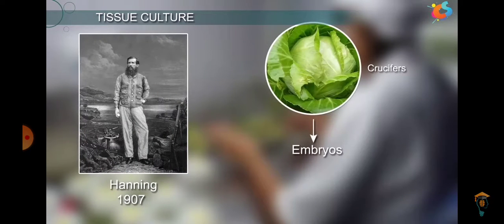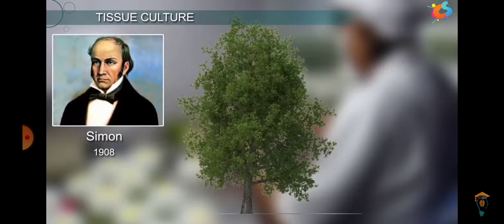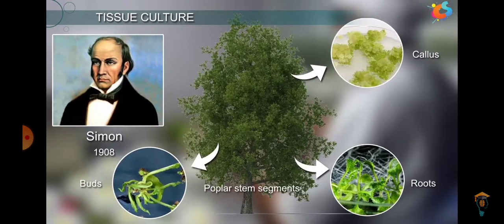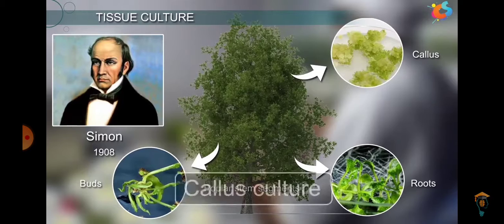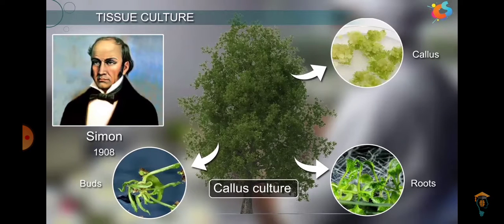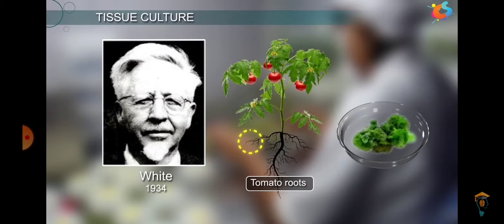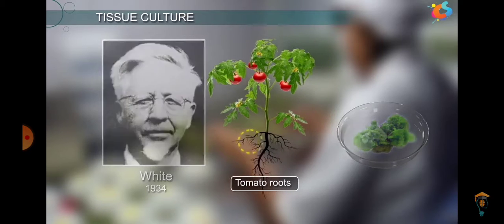Later, in 1907, Hanning grew the embryos of crucifers to maturity. In 1908, Simon grew callus root buds and carried out callus culturing of the populus stem plant. White, in 1934, put forth the hypothesis that tomato roots could be utilized and grown, which paved the way and gave an advent to the technique of plant tissue culture.